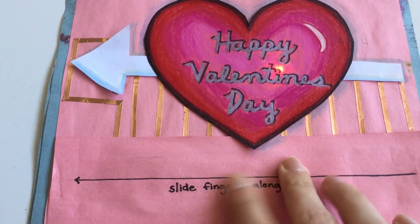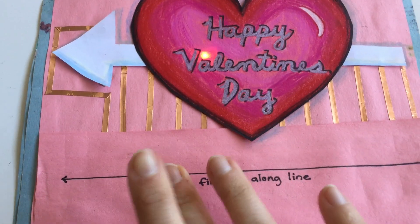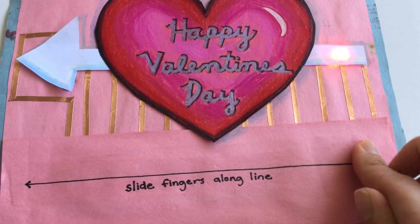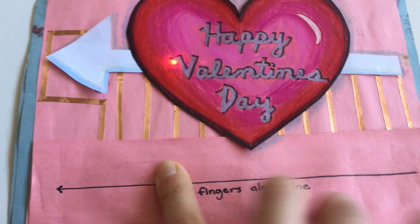I can slide forwards, I can slide backwards, I can move fairly quickly, I can move fairly slowly. But as I move my finger along, I light up different parts of the circuit in order.